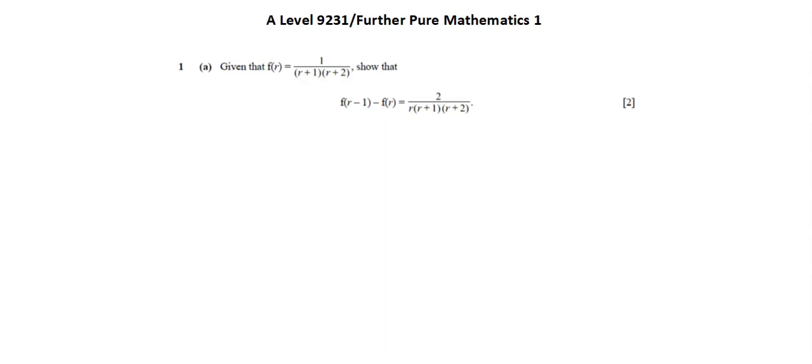I'll set a subtraction expression, replacing r with r minus 1 in the first term and leaving r as is in the second term. So we have 1 over r plus 1 will become r minus 1 plus 1, and r plus 2 will become r minus 1 plus 2, minus the expression as given, f of r, 1 over r plus 1, r plus 2. In the left term, I can simplify minus 1 plus 1 becomes 0, and minus 1 plus 2 becomes plus 1.